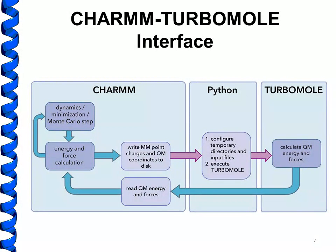How our implementation works is that we implement the CHARM Turbomole interface into a module — specifically the QCHEM module of CHARM — where when a QM region is designated, every time an energy and force calculation is invoked during dynamics, minimization, or Monte Carlo, it identifies that there's a QM region and triggers the CHARM Turbomole interface. CHARM then writes the MM point charges and QM coordinates to disk, and a Python script is used to interface between CHARM and Turbomole.